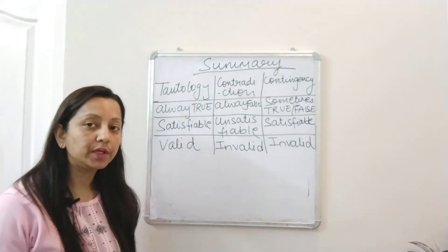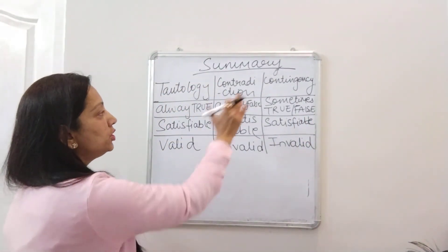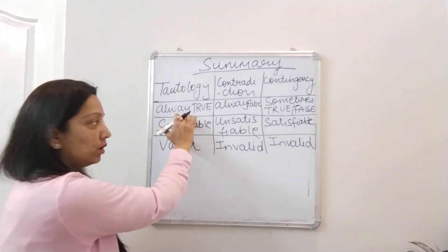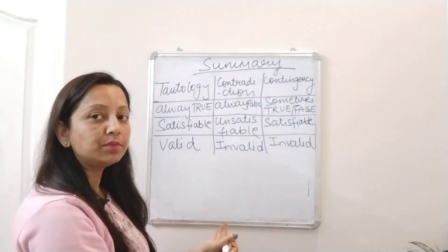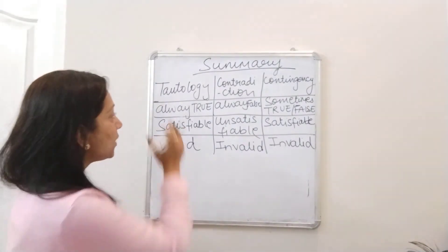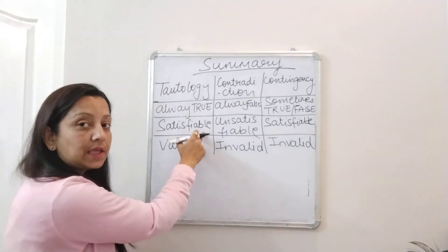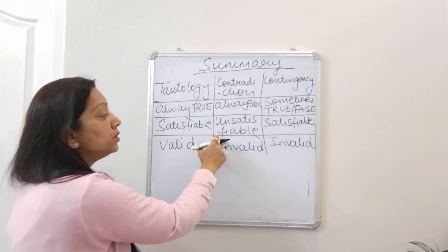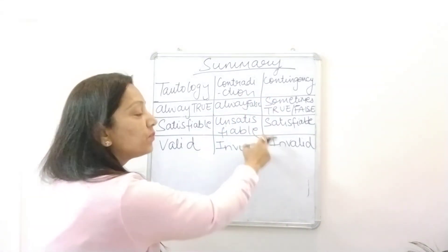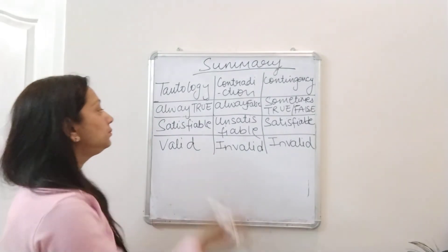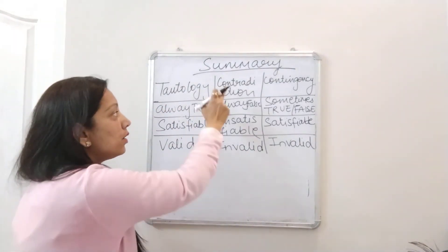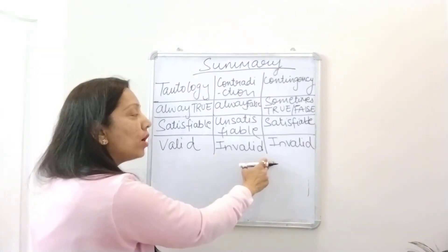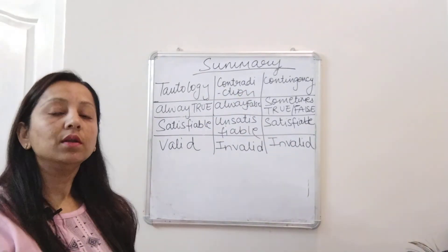So this is the summary of what we have studied in today's lecture: tautology, contradiction, contingency. Tautology is always true, contradiction is always false, contingency is sometimes true and sometimes false. Tautology is always satisfiable, contradiction is unsatisfiable, contingency is satisfiable. Tautology is always valid, contradiction is invalid, and contingency is invalid.